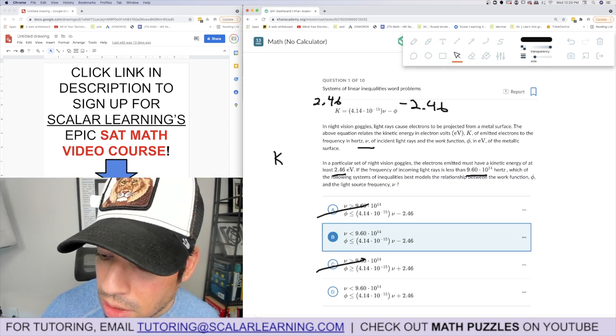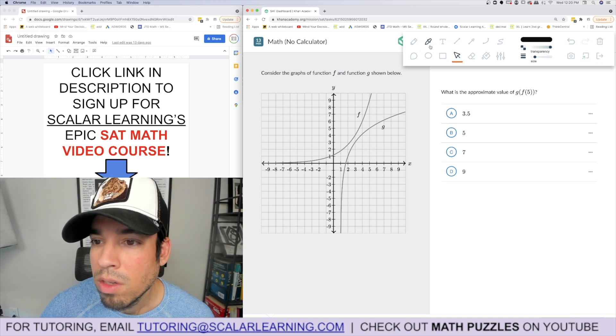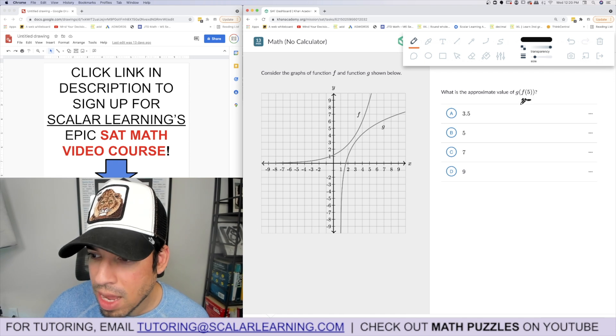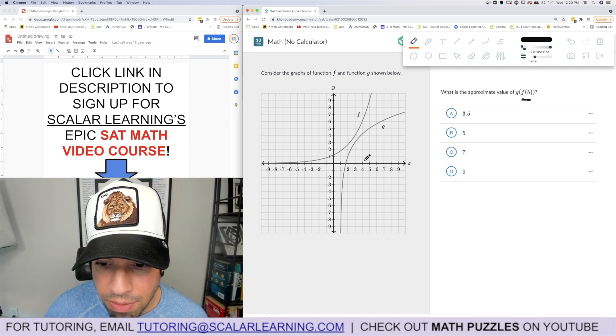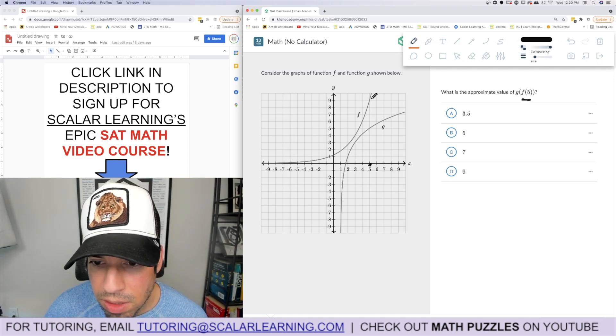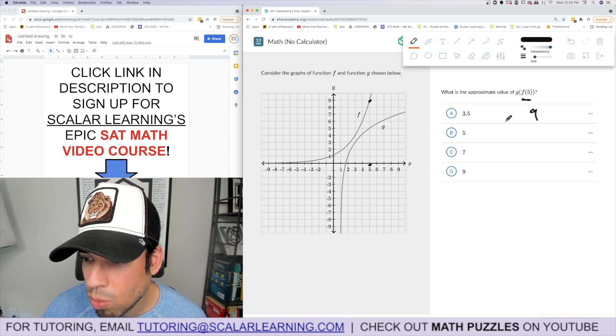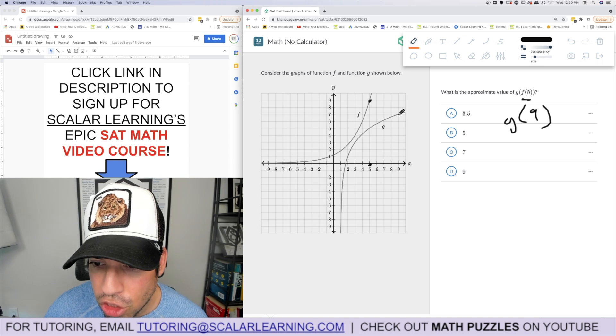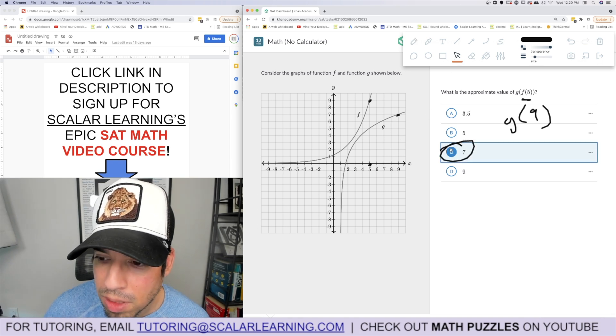Question two: what is the approximate value of g of f of five? We got to pick up the pace. Okay, so first find f of five. f is this function, f of five is nine. So now they're saying what is g of nine. We go here, g of nine is seven. Boom, done.